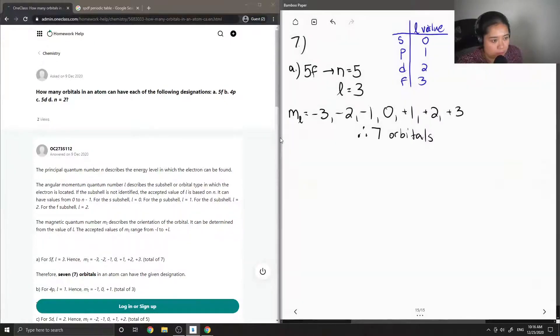Okay, so let's do the same thing for b, for the 4p orbital. n is equal to 4, l is equal to 1. So that means our ml value ranges from negative one to positive one. So that means there's only three orbitals.